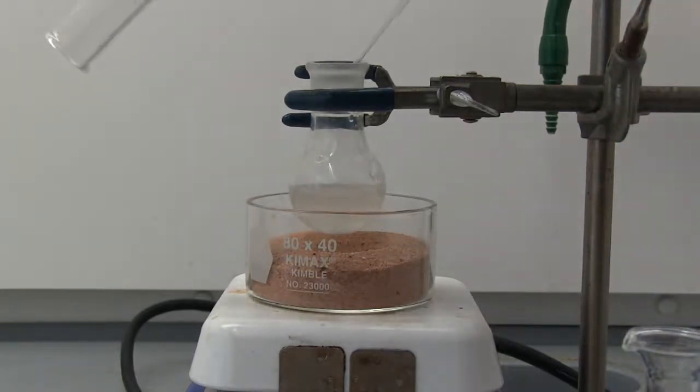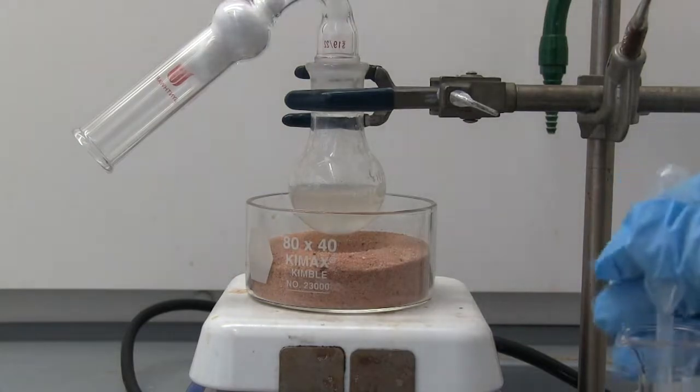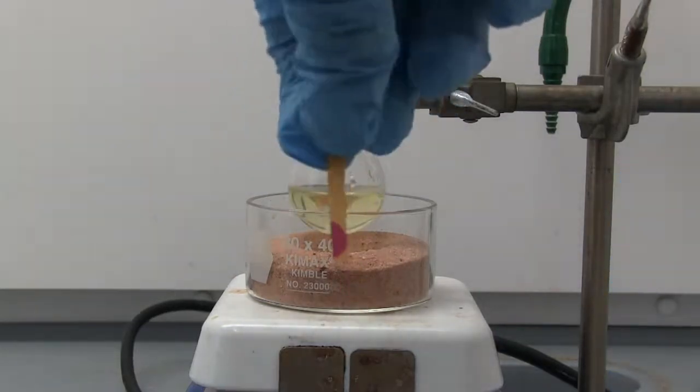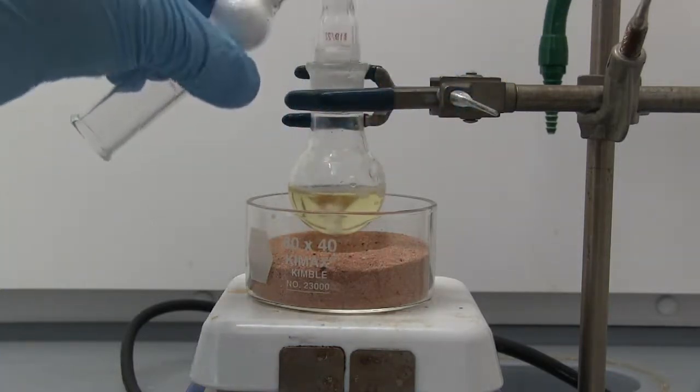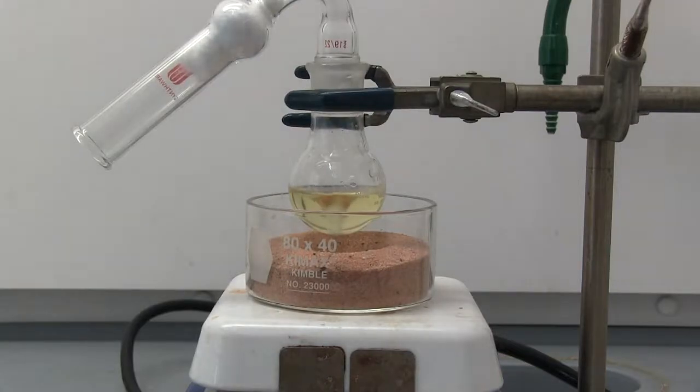Next, we'll get a piece of pH paper to test to make sure we're at an acidic solution. All right, so we've got a purplish-red solution, so we are in acidic conditions. Next, we will extract this.